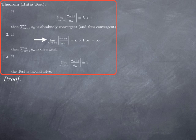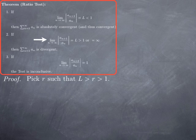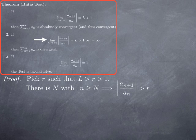Turning to the second case where the limit is greater than 1: we pick r between 1 and L, and compare with the geometric series of common ratio r, which is now divergent. Since L is the limit, for indices large enough we can make the ratio greater than r. By the same argument as case 1, for every positive integer k, |a_{N+k}| > r^k |a_N|.